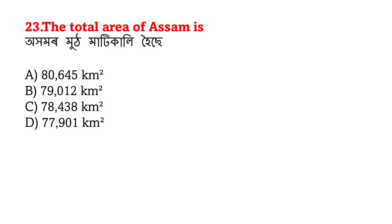Total area of Assam - ahamor mud matikali hoishe. The answer is C. Ahamor mud matikali hoishe approximately 78,438 square kilometers - sarikha 38,000 borgokilometar.